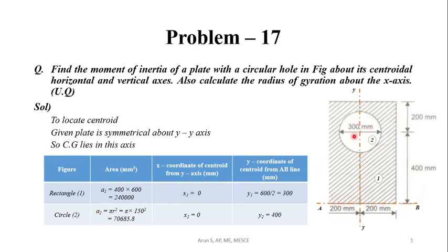For the second component, we consider the circle. The circle area is πr², giving the calculated value. The circular centroid is at the midpoint of the circle, which lies on the y-axis, so x₂ = 0. For y₂, the distance from a-b to the center of the circular hole: the center is located at 400 mm from a-b, so y₂ = 400 mm.